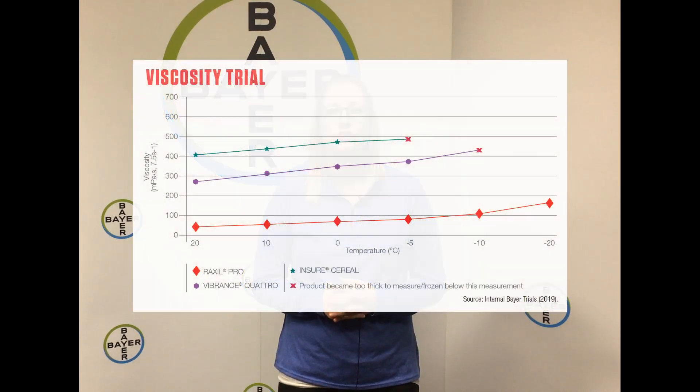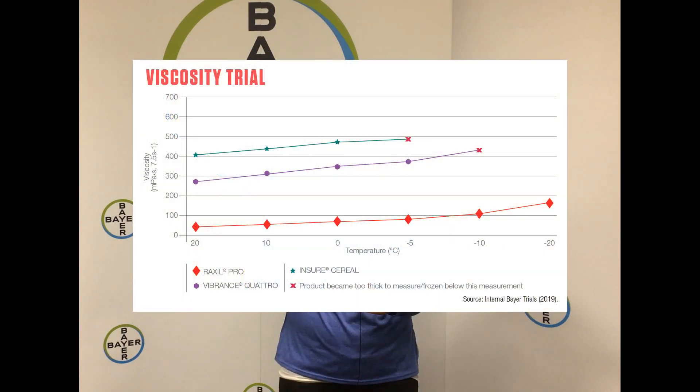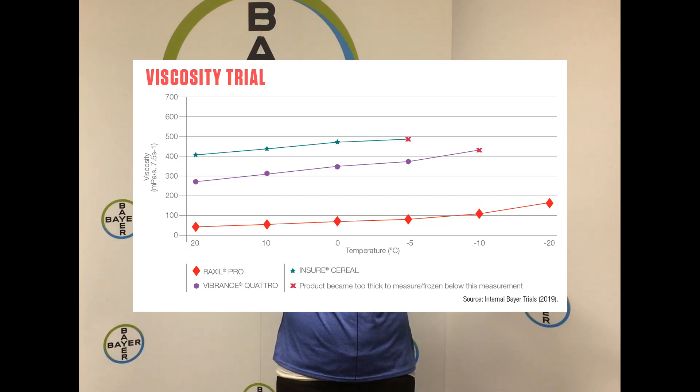Having a product with similar viscosity in warm and cool conditions ensures that when you're treating the seed in different conditions, you're still getting that right product rate. Whereas if you have a product with a really different viscosity in warm versus cold, you can get a very different — an incorrect — rate on your seed.